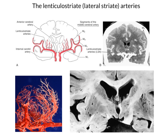For example, blockage of a vessel in the internal capsule is likely to create a pure motor stroke, since the internal capsule mostly contains descending corticospinal projections. If the lacune is in the thalamus, this could lead to a pure sensory stroke, destroying part of the thalamus which is an important sensory relay station.